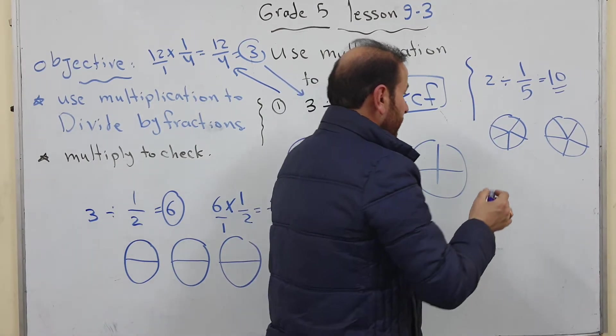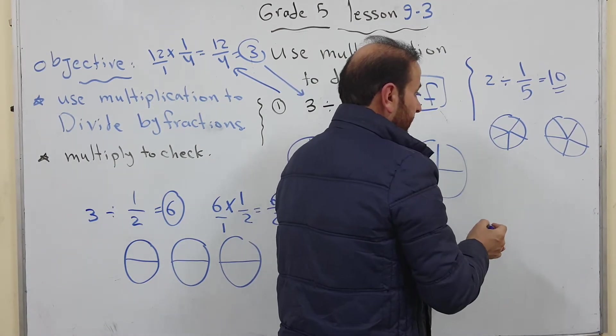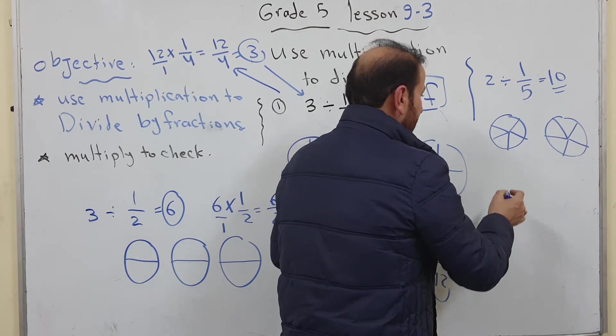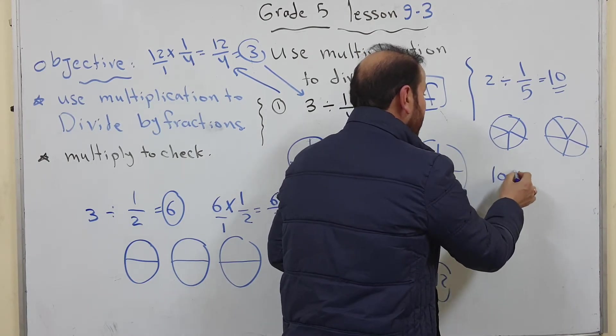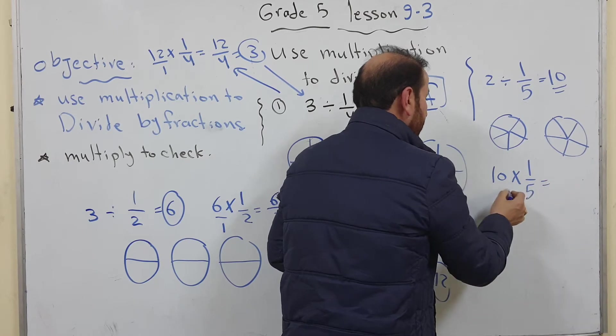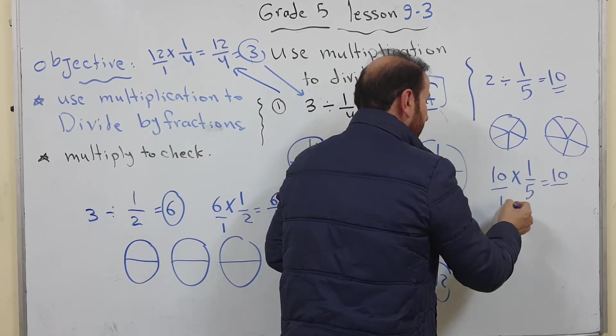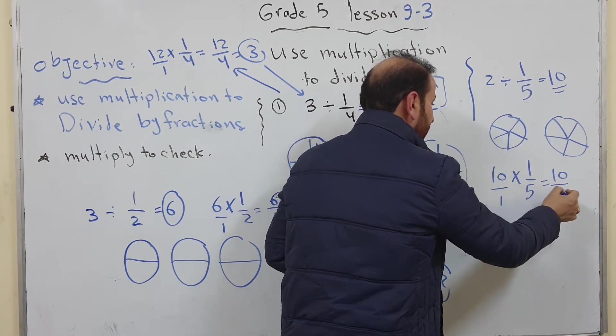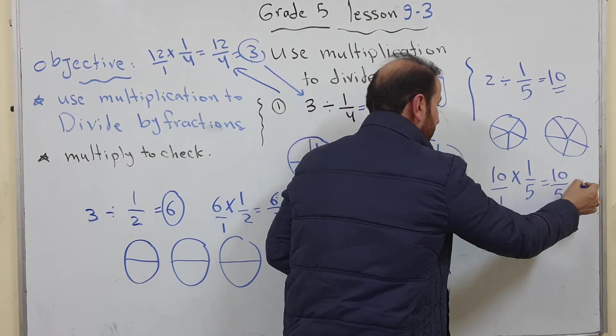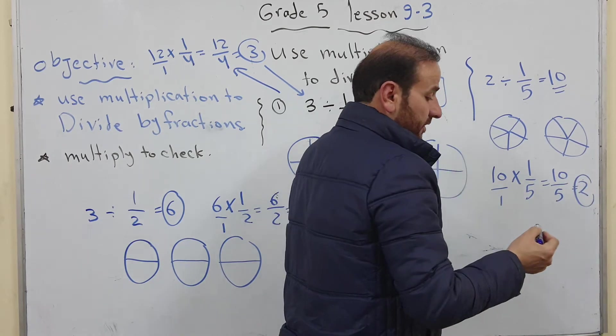So to check my understanding or check my answer I multiply the quotient 10 by 1 over 5 the divisor. Then here 1 times 10 equals 10, 5 multiply 1 equals 5, which equals 2, the same as dividend.